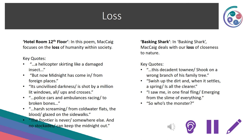Loss also occurs in Hotel Room 12th Floor — McCaig focuses on the loss of humanity within society. Key quotes: 'A helicopter skirting like a damaged insect', 'But now midnight has come in from foreign places', 'Its uncivilised darkness is shot by a million lit windows, all ups and crosses', 'Police cars and ambulances racing to broken bones', 'Harsh screaming from cold water flats', 'The blood glazed on the sidewalks', 'The frontier is never somewhere else', and 'no stockades can keep the midnight out.' In Basking Shark, McCaig deals with our loss of closeness to nature. Key quotes: 'This decadent townie shook on a wrong branch of his family tree', 'Swish up the dirt and when it settles, a spring is all the clearer', 'I saw me in one final fling, emerging from the slime of everything', and 'So who's the monster?'